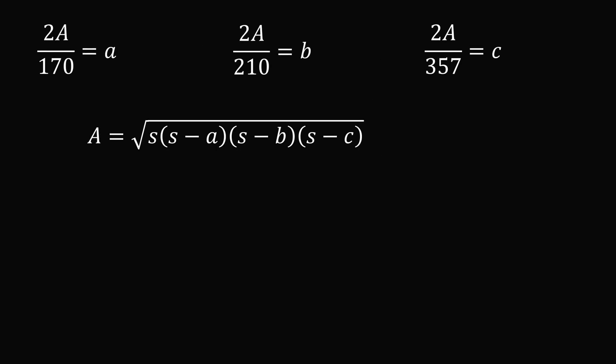From here, we will use Heron's formula for the area of a triangle, where S is the semi-perimeter. It will be convenient to square this formula to get rid of the square root.